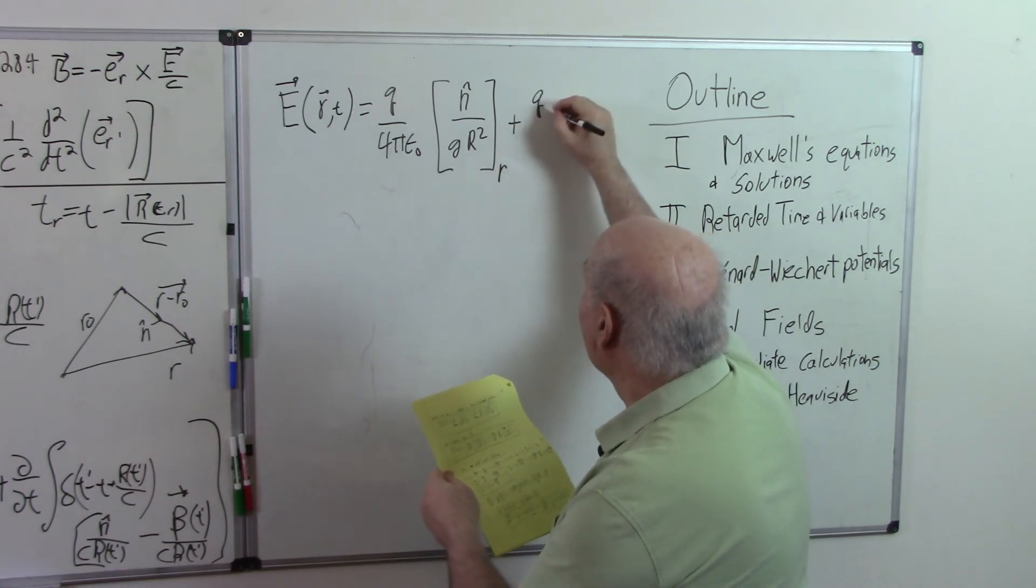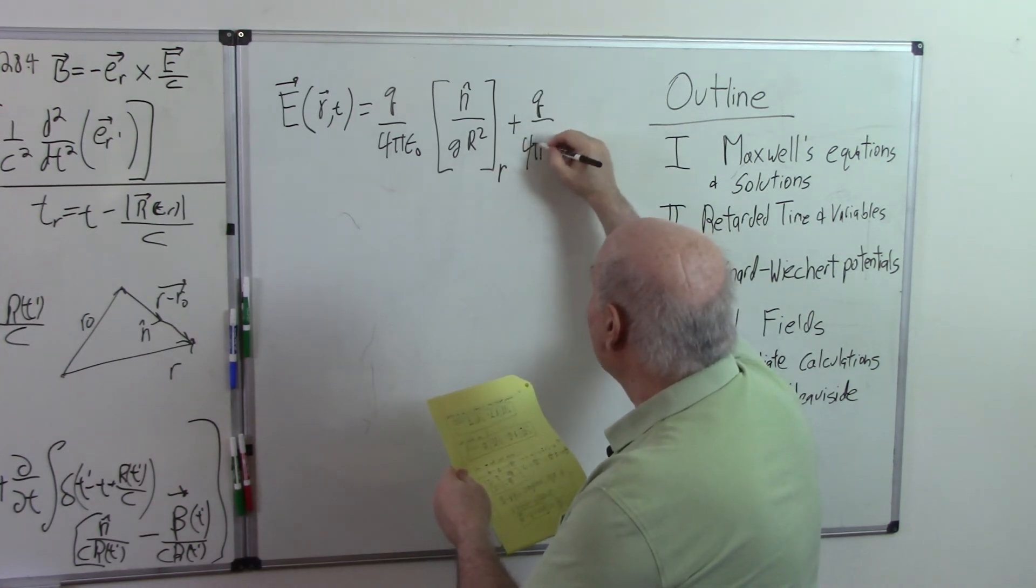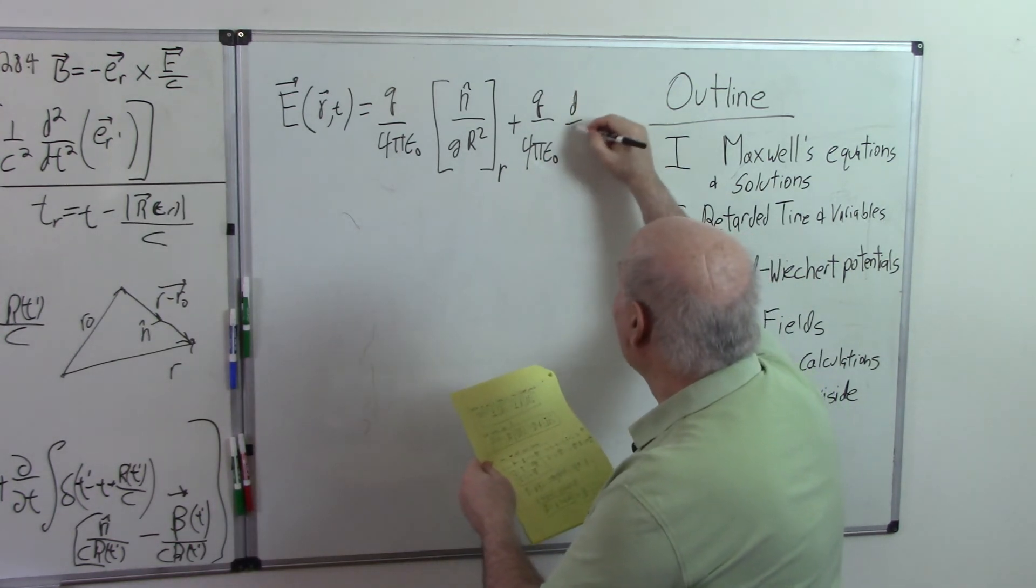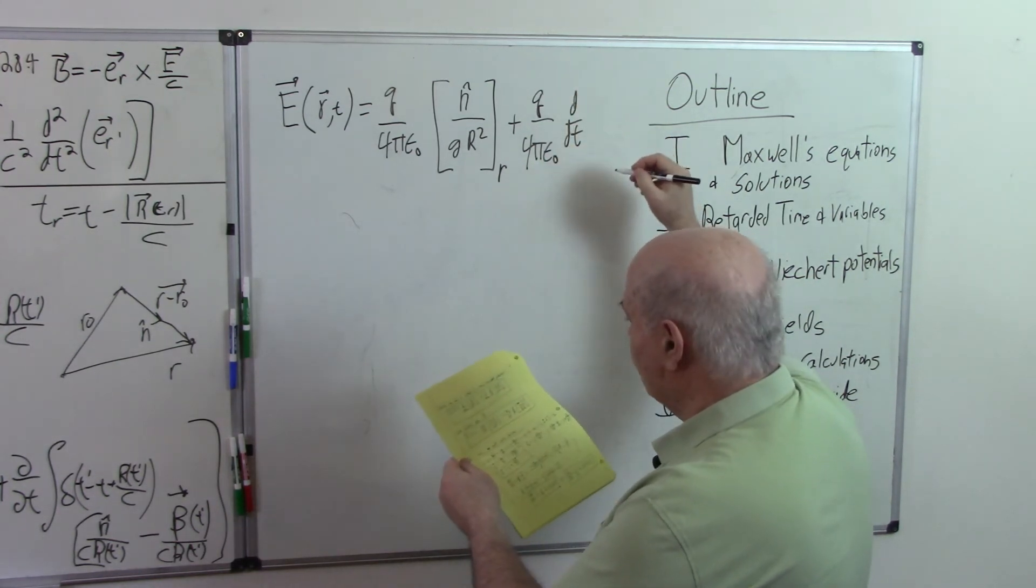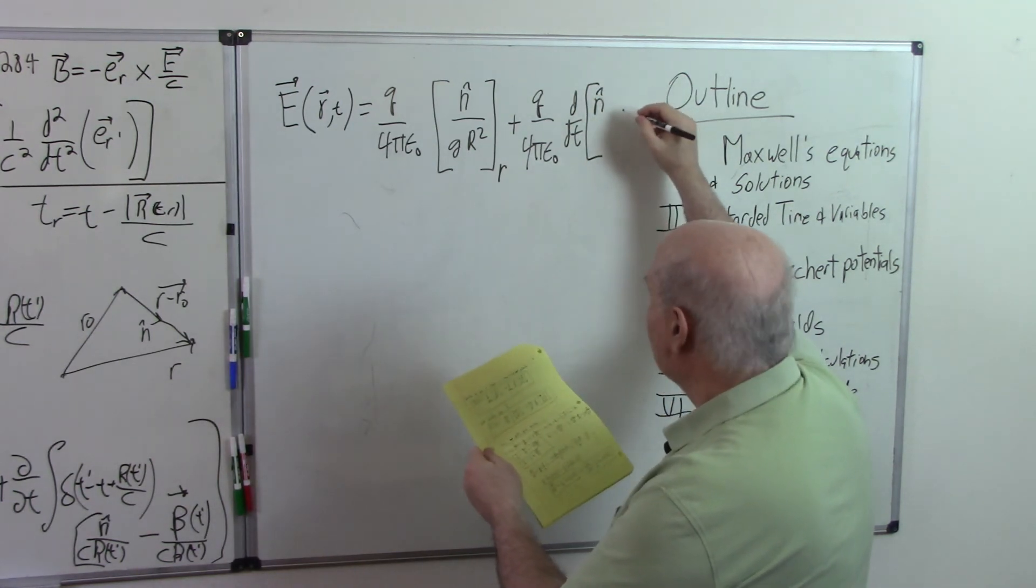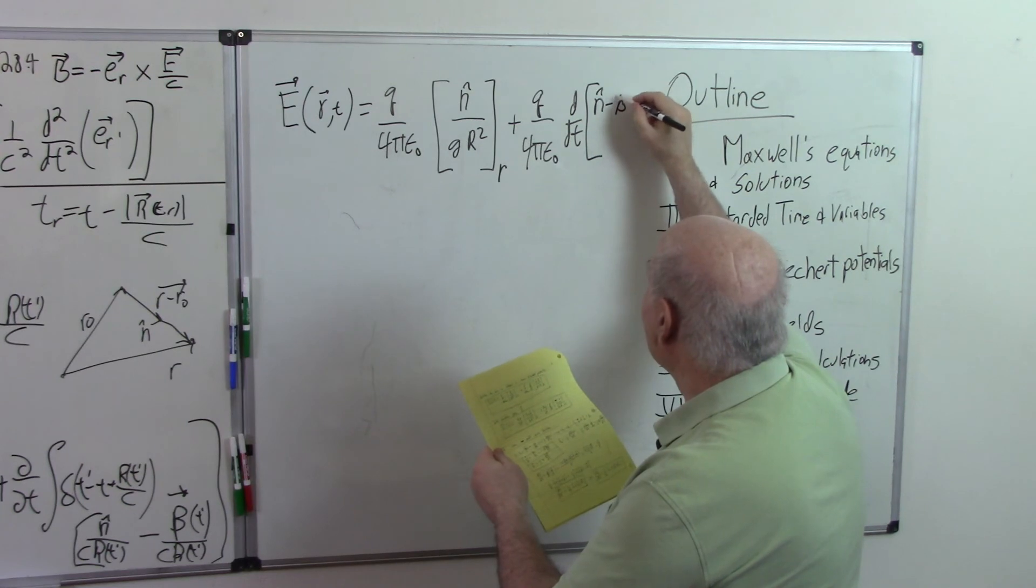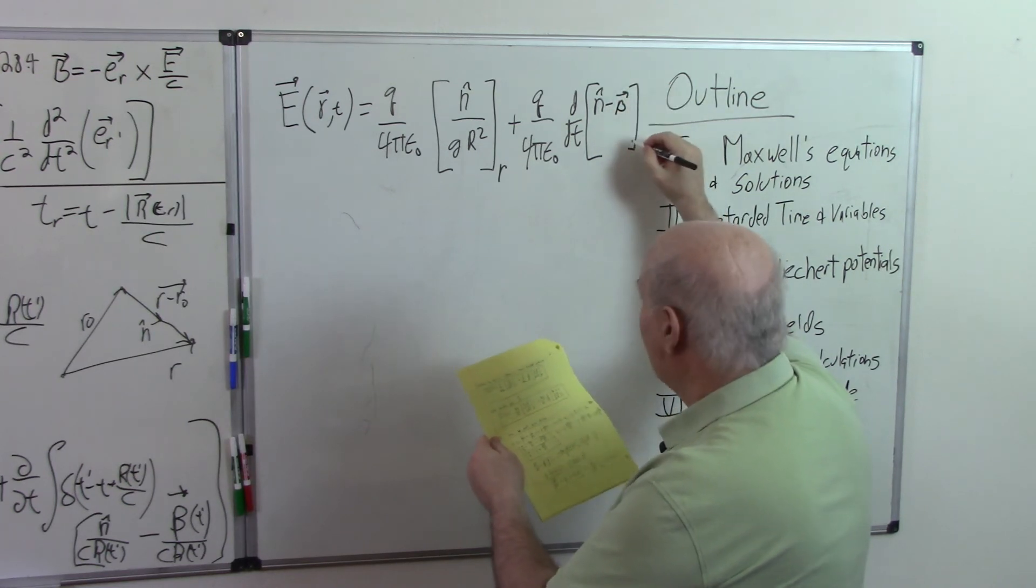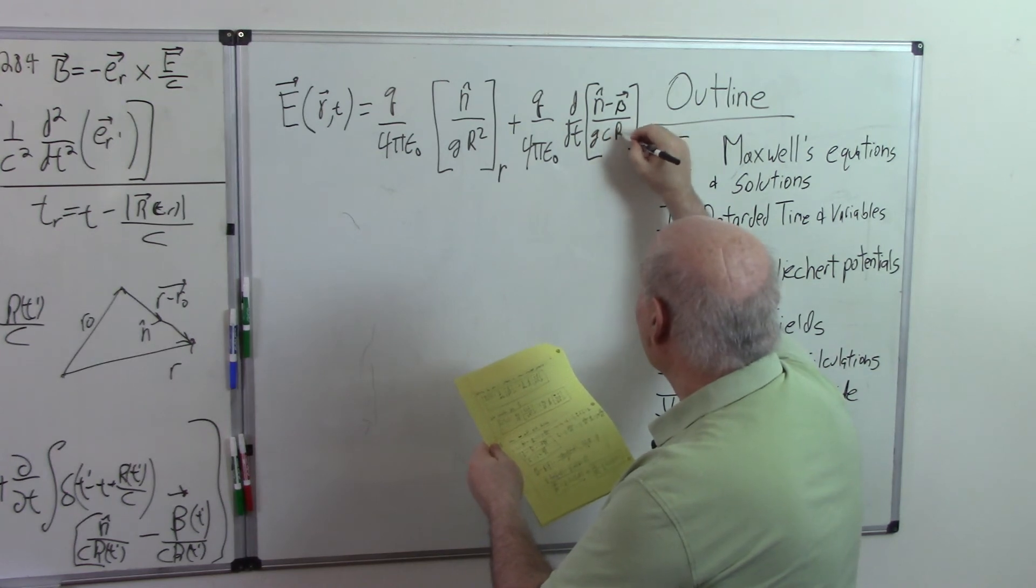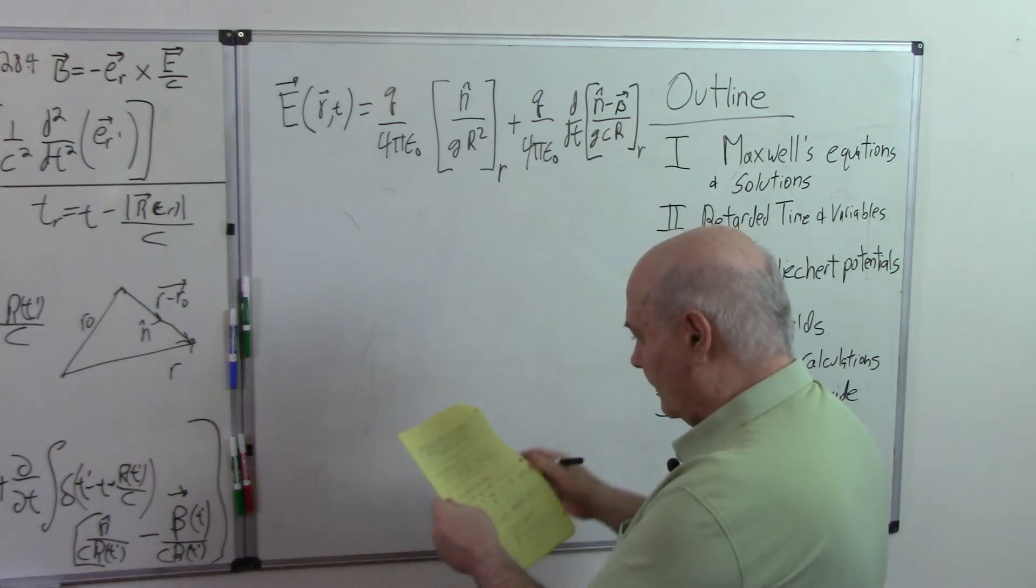E of R, t equals q over 4 pi epsilon zero, n-carat over g r squared, and this is all evaluated at the retarded time, just like in the Lienard-Wiechert thing. And plus q over 4 pi epsilon zero d dt, n-carat minus beta over g cr, all evaluated at the retarded time.